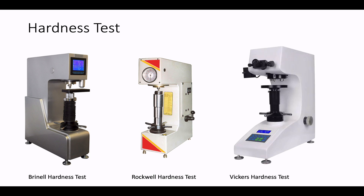In general, different materials differ in hardness. For example, hard metals such as titanium and beryllium are harder than soft metals such as sodium and metallic tin, or wood and common plastic. These instruments help engineers to choose a material based on its hardness.